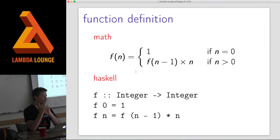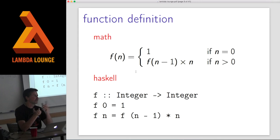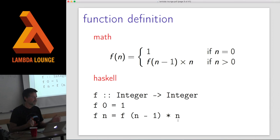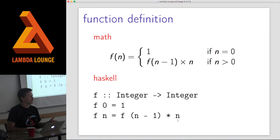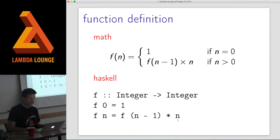With function definitions, we're all used to math function definitions. The top one shows Fibonacci defined in mathematical notation, and the Haskell version looks very similar except it has conditions as part of the argument. It says F of 0 is 1, and F of any other number n is n minus 1 times n. So it's almost identical. And notice there's no magic — no reading a file, generating a random number. The whole idea of a function is: when you give it an input, it gives back the exact same output every single time.